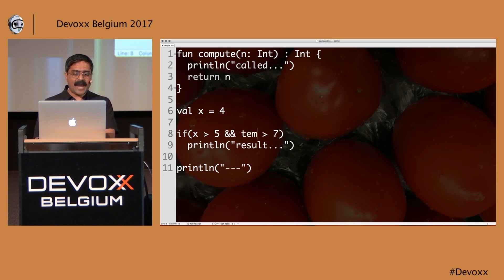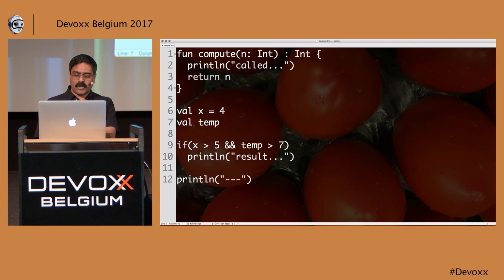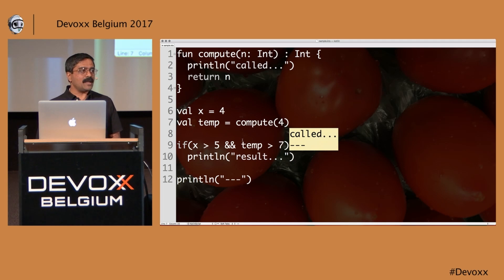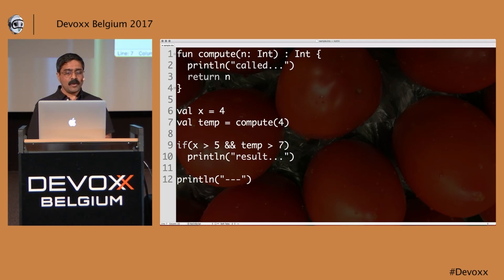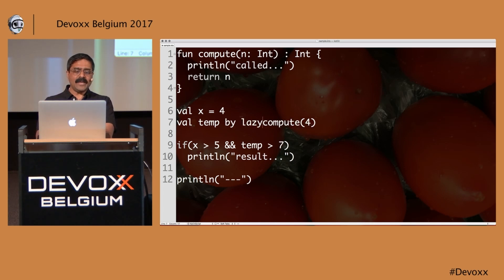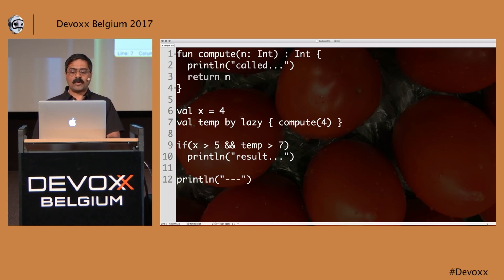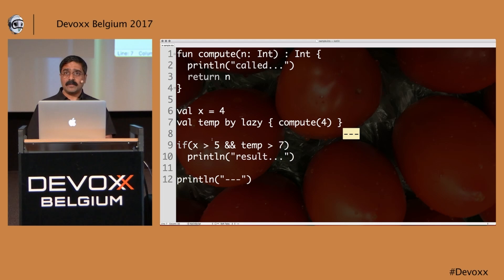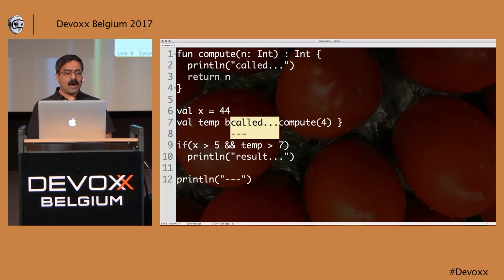However, if I take the condition out and say 'val temp = compute(4)', it calls the compute method even though we may not need the value. But you can do something elegant: 'val temp by lazy { compute(4) }'. That postpones calling it until a later time. With lazy, it never calls compute when x = 4 (since x > 5 is false). But if x = 44, x is greater than 5, and now compute is called — but not otherwise.